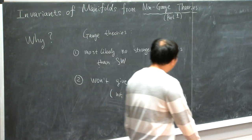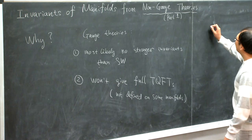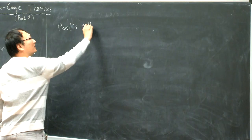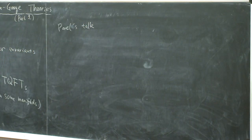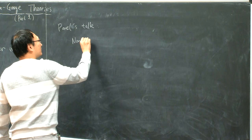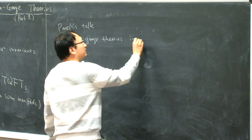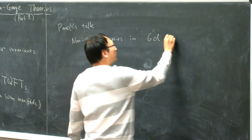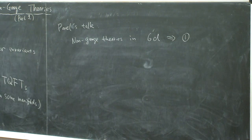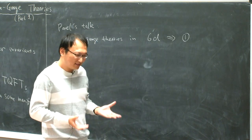So will gauge theory help with these two minor problems? From the upcoming talk, it will be demonstrated how to use non-gauge theories in six dimensions to attack problem one. Today we have already seen that the invariants, even from the simplest such theory, have a very good structure.